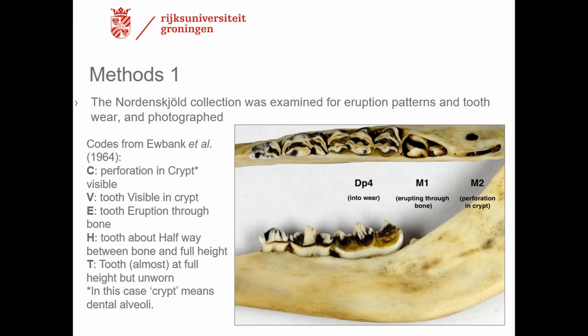All mandibles from the northern cold collection were examined for eruption patterns and tooth wear. The teeth of mandibles in age classes ranging from 0 to 3 years were assessed for eruption state following the codes of Eubank et al. (1964) — for example, 'C' stands for perforation in crypt visible, as shown on screen. For tooth wear assessment, I examined the dentine-enamel patterning of the occlusal surface of the deciduous premolar 4, premolar 4, first molar, second molar, and third molar.